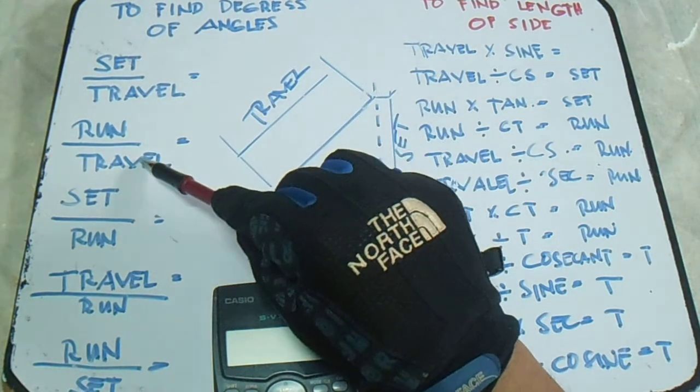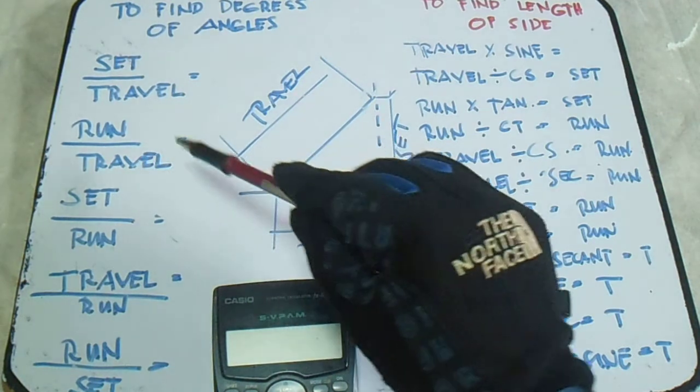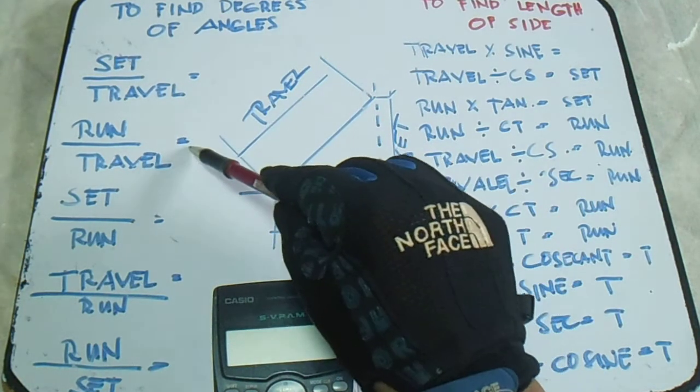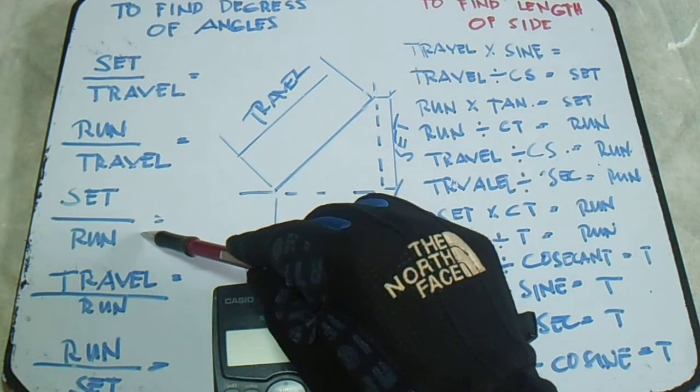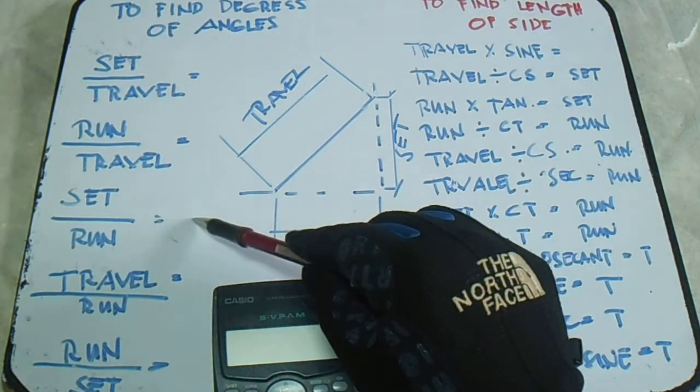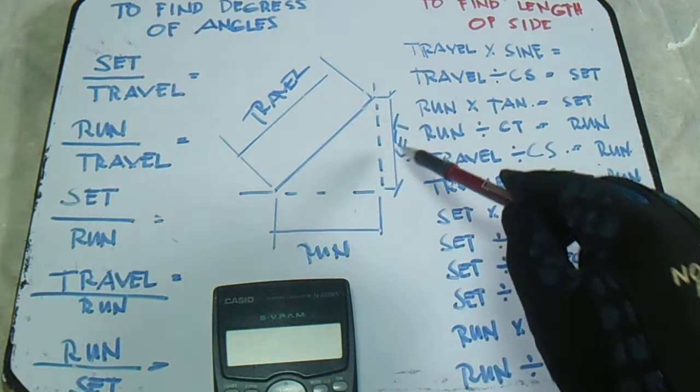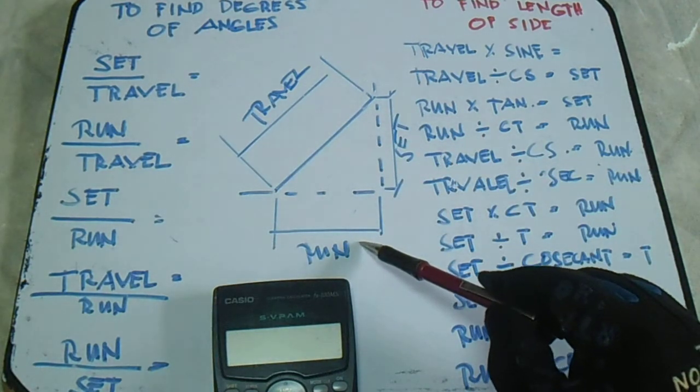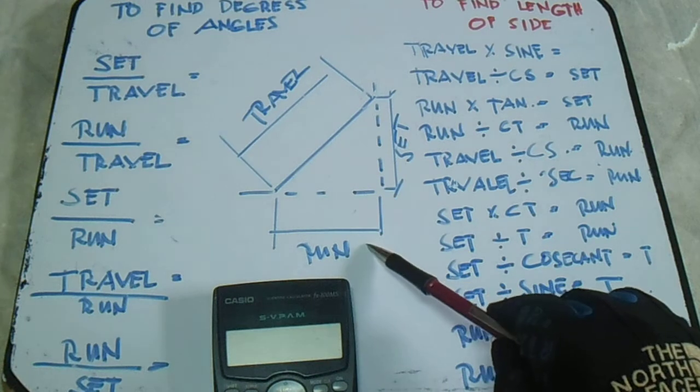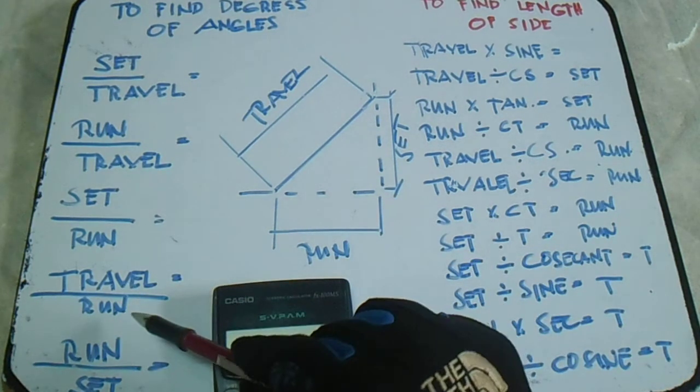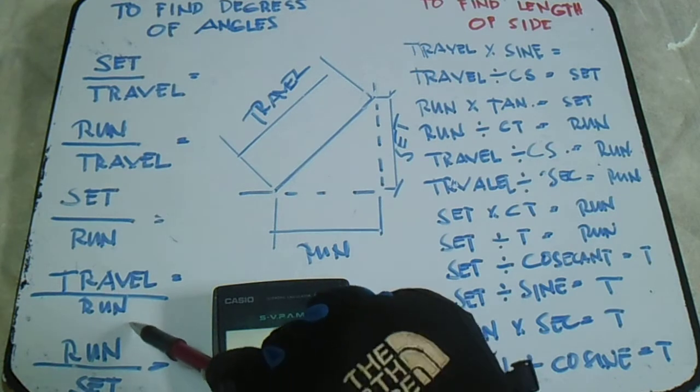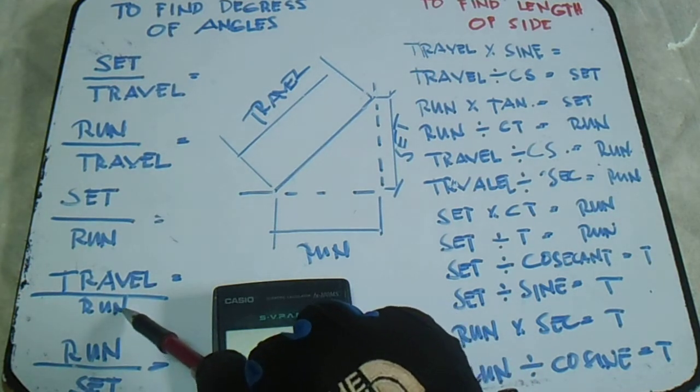Next is run divided by travel equals cosine, and set divided by run equals tangent. So we have set and run equals tangent. This is to find the degree.